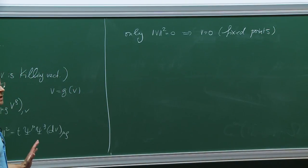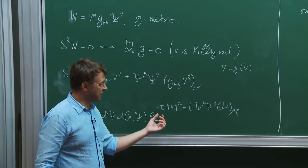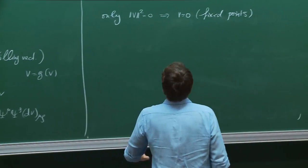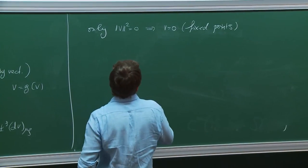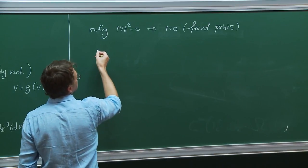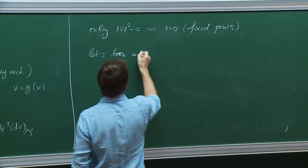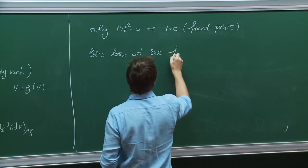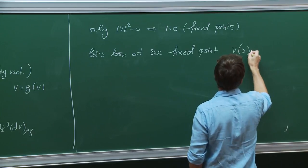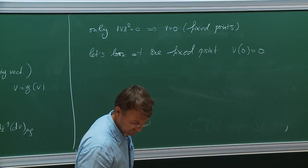If the action is free, this integral will collapse to nothing interesting, since V is never 0 and everything is suppressed. So let's concentrate on one fixed point and assume it is at the origin — I can choose coordinates. I'm looking at a neighborhood of one point.